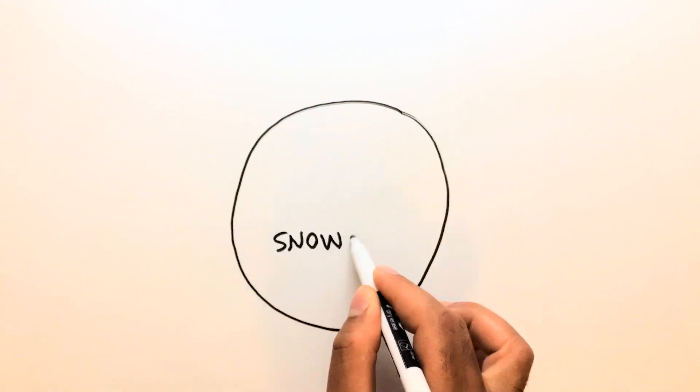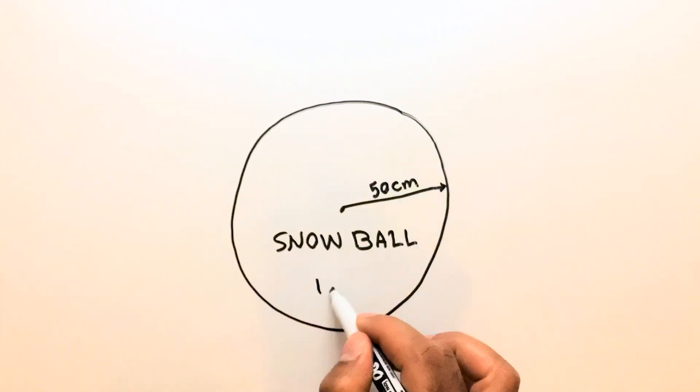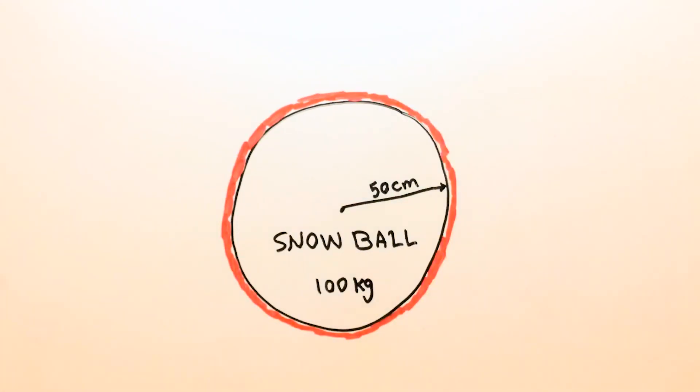For simplicity, I consider a 50 cm radius spherical snowball covered with a 2 cm thick insulation material. I assume the snow rests inside at 0 degrees celsius, and the outside environmental temperature is at 27 degrees celsius.